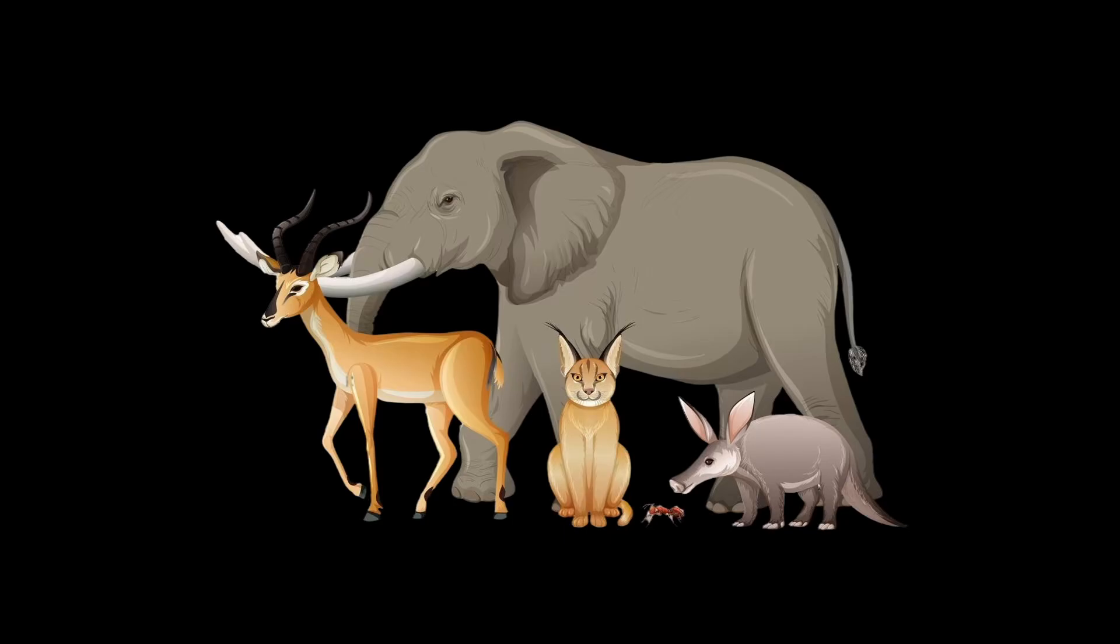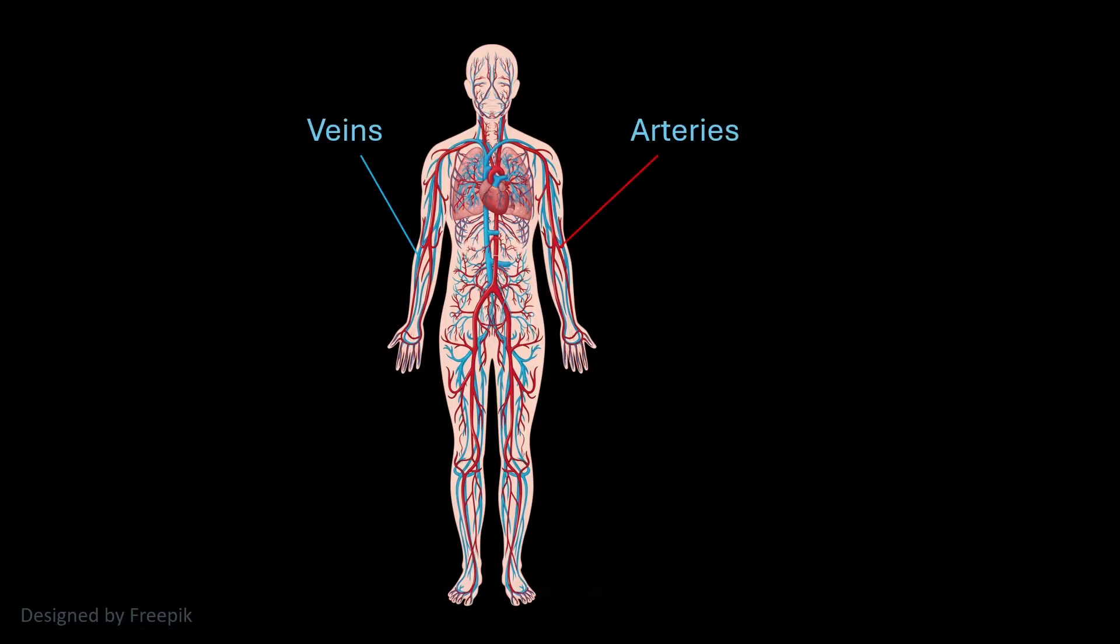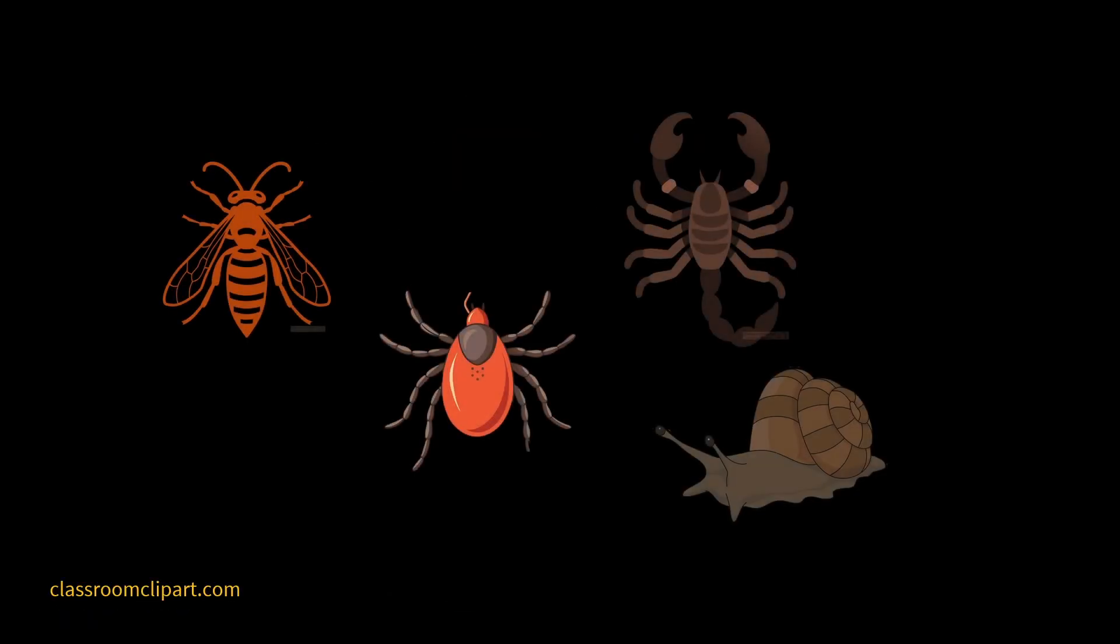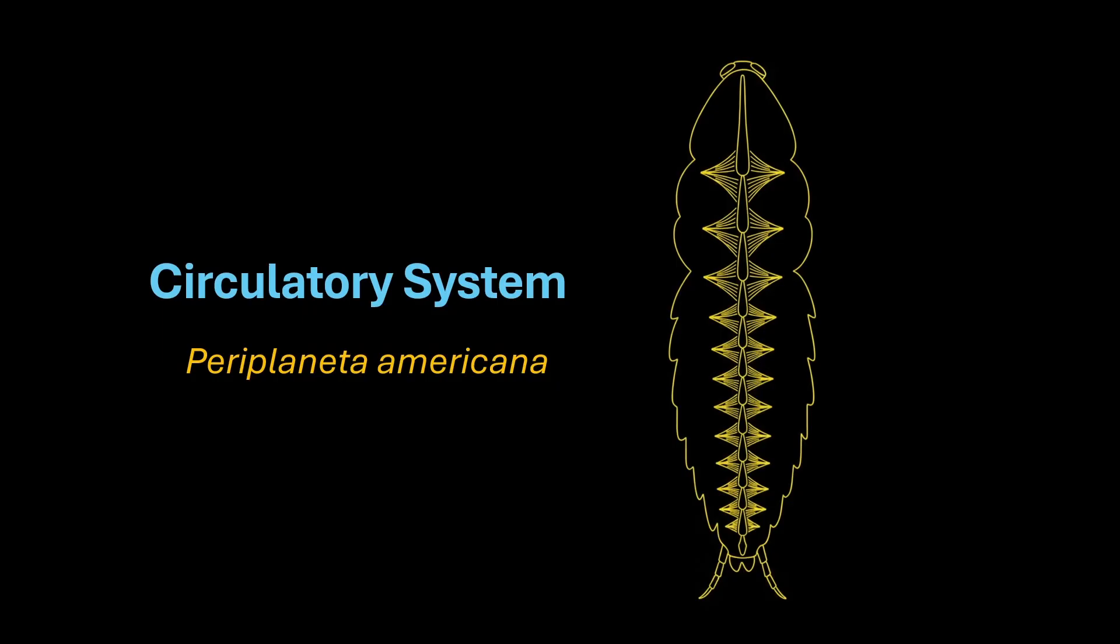You might assume that all animals have veins and arteries to transport blood just like humans do, but in reality many animals, including cockroaches, use a completely different system. So in this video, we are going to explore the circulatory system of cockroach Periplaneta americana.